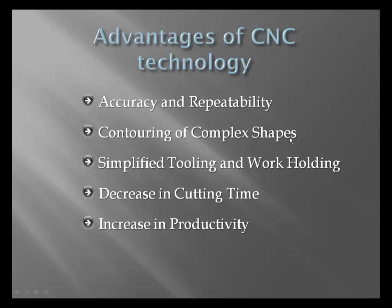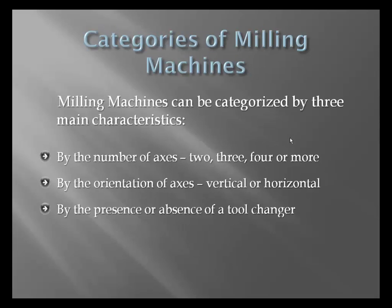The advantages of CNC technology include accuracy and repeatability, contouring of complex shapes, simplified tooling and work holding, decrease in cutting time, and increase in productivity. CNC machines can be grouped into at least three main categories: number of axes, the orientation, and the presence or absence of a tool changer (TC).